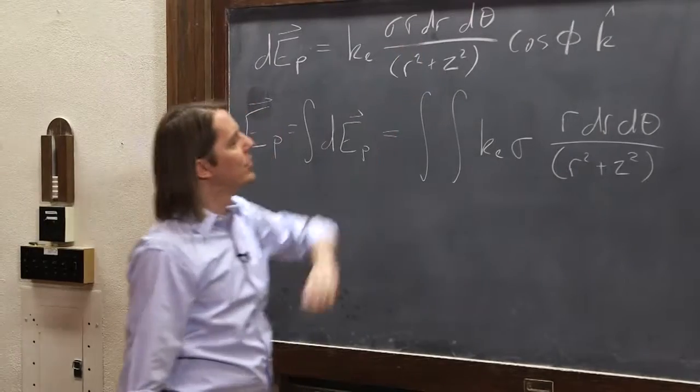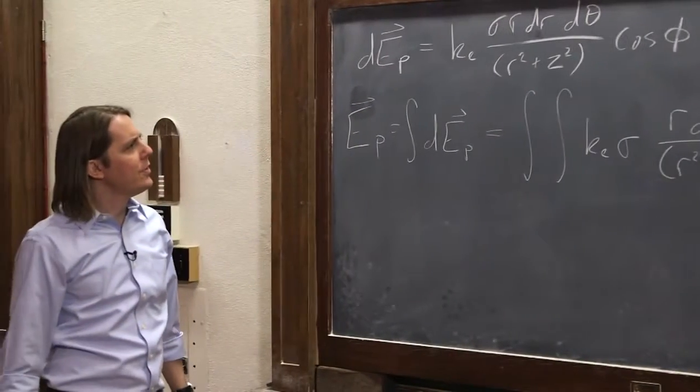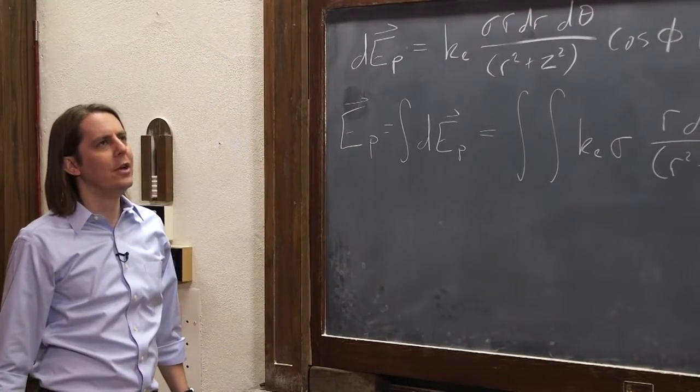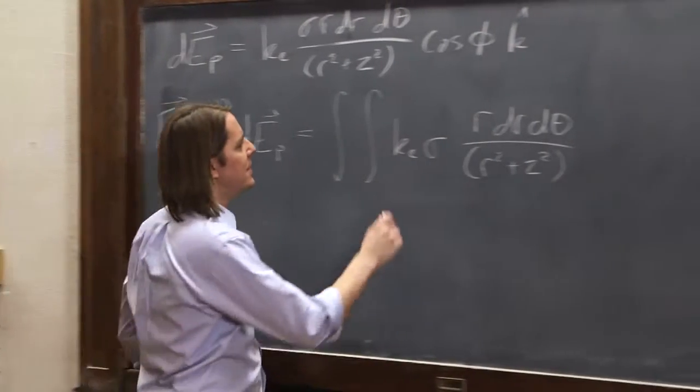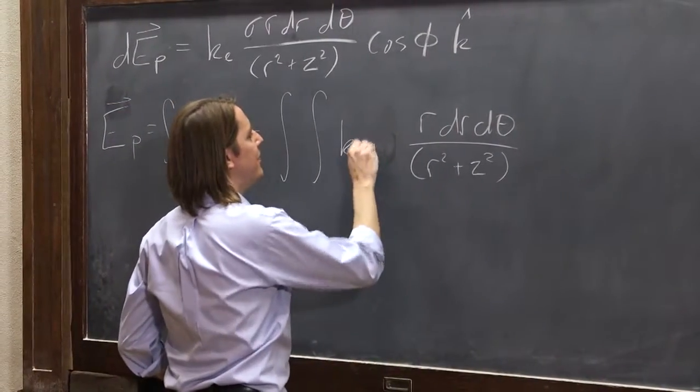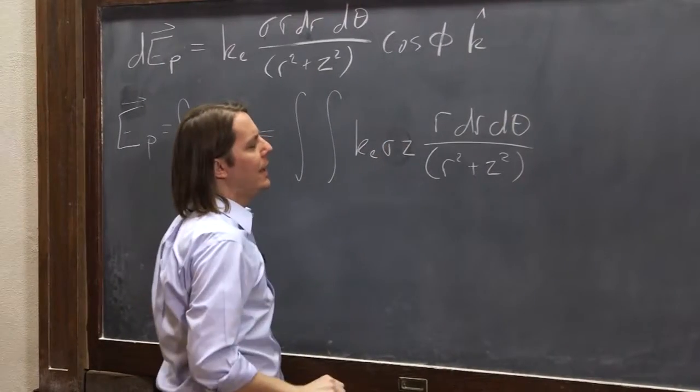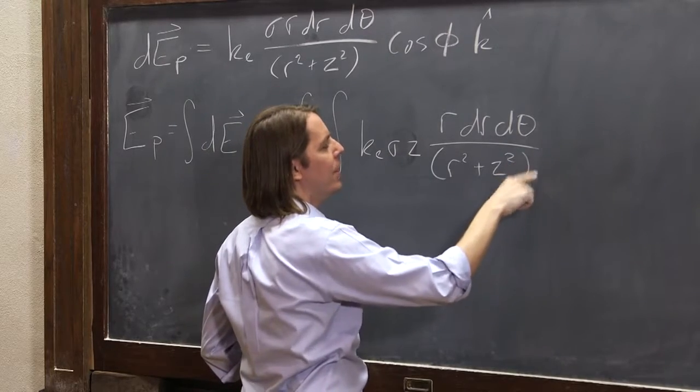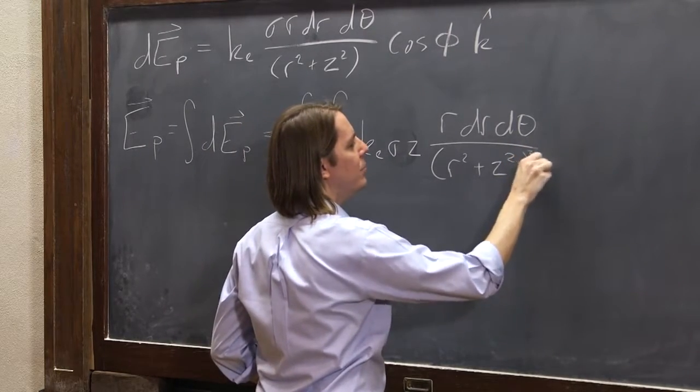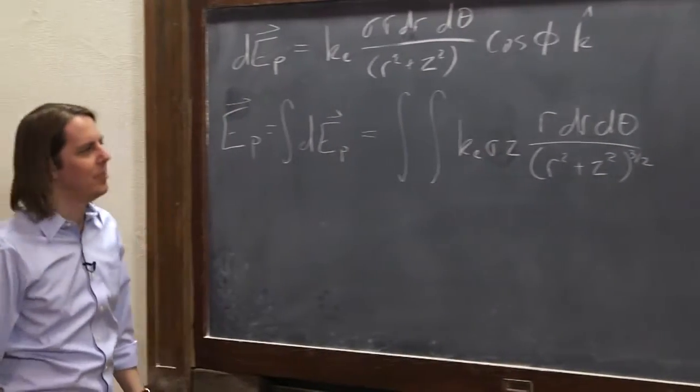And we never dealt with the cosine phi. Let's think cosine phi from that drawing. Cosine's adjacent over hypotenuse. Adjacent was z. So there would be a z in here. Let me fit it in here. And then the hypotenuse is the square root of r squared plus z squared. So there's another one of these in the denominator, which brings that to the 3 halves, if you will allow me to skip a step there.